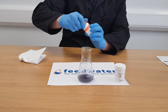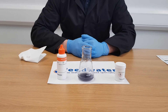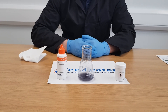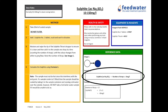Using the formula found in the method, calculate the sulfite concentration. Each drop represents 5 mg per litre of sulfite in the 20 ml sample. So, for example, if the test took 17 drops, then you would multiply 17 by 5, which gives you a sulfite reserve of 85 mg per litre.